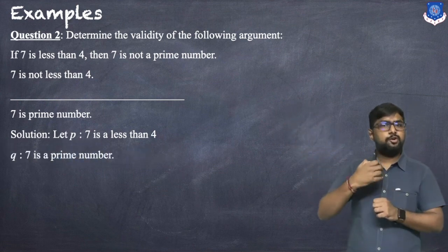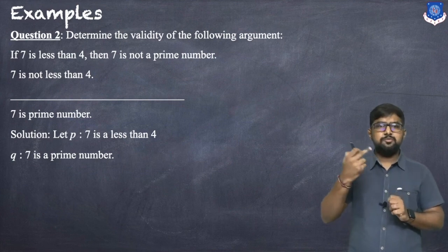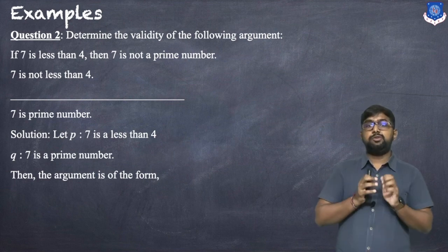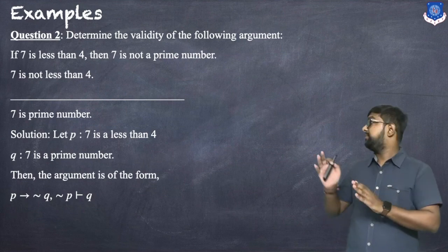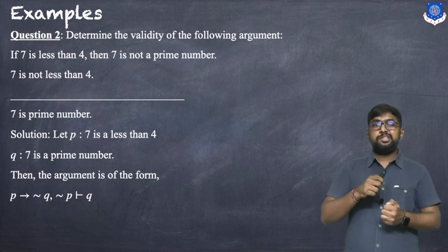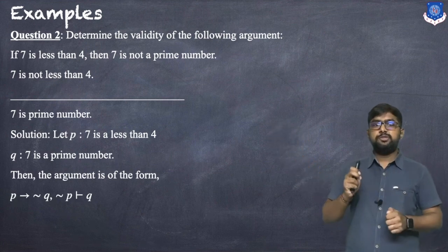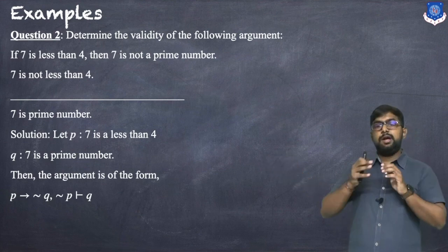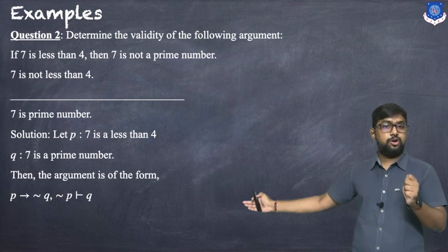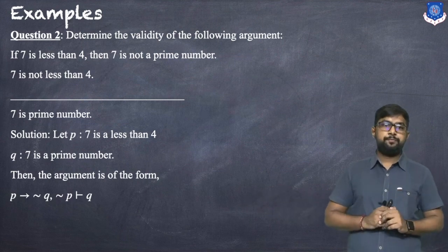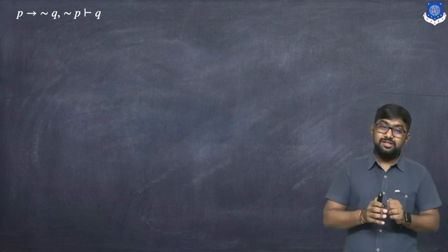Let P: '7 is less than 4' and Q: '7 is a prime number.' Then '7 is not a prime number' is ¬q. The first premise is p → ¬q. The second premise is ¬p ('7 is not less than 4'). The conclusion is Q ('7 is a prime number'). So the symbolic form is: p → ¬q, ¬p ⊢ Q.